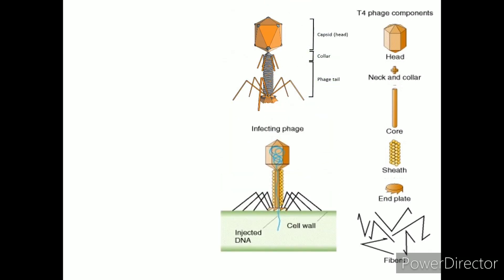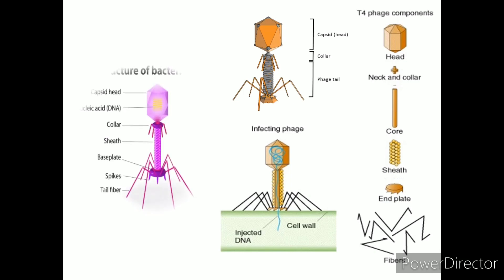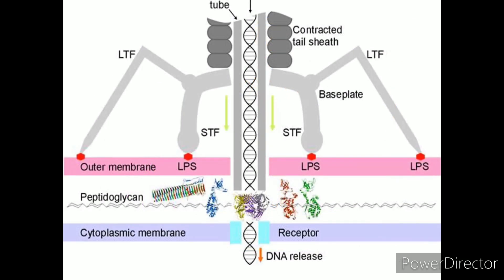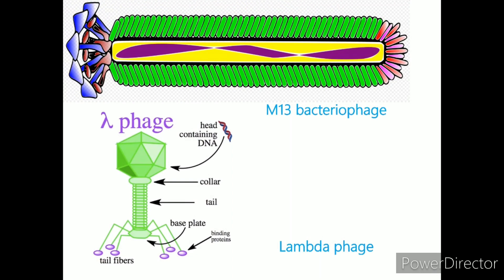Here in this diagram, you can see a bacteriophage infecting a bacterial cell by penetrating it and injecting DNA into the bacterial cell. Here you can see the complete structure of the bacteriophage. And in this diagram, you can see a bacteriophage injecting its genetic material into the bacterial cell.